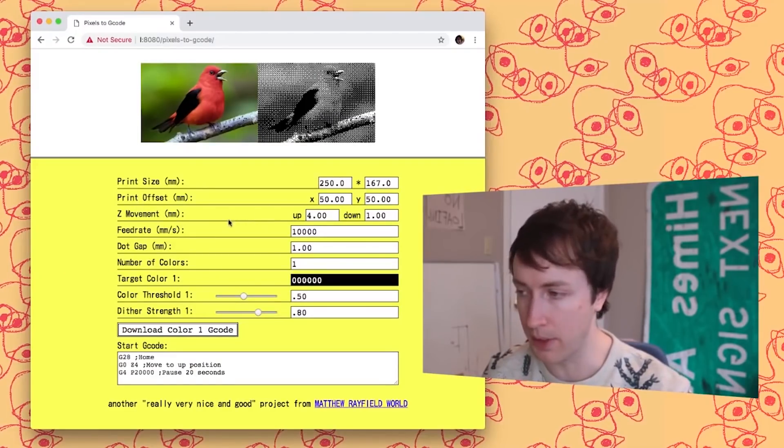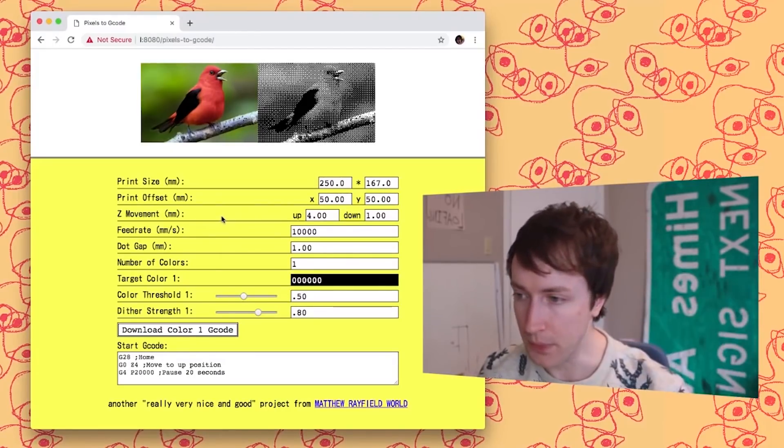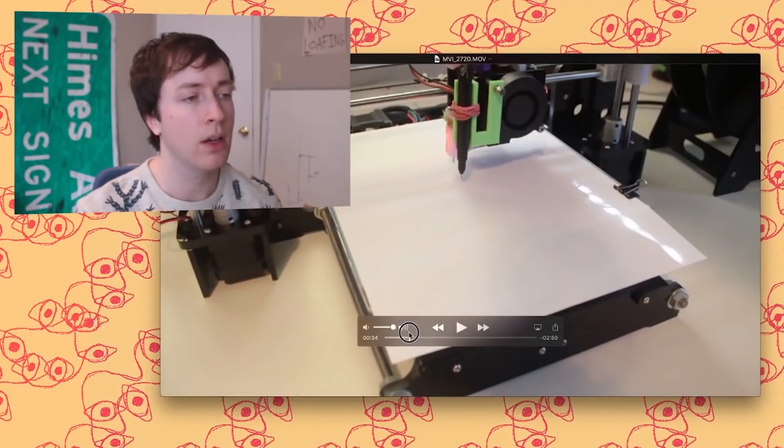The secret sauce is a web app that Matthew created that turns any image file into a dither dot matrix G-code file that you can send straight to your printer. You'll have to find a way to attach a pen to your print head, but even rubber bands seem to work.